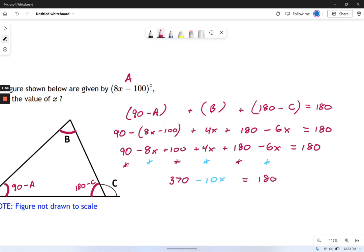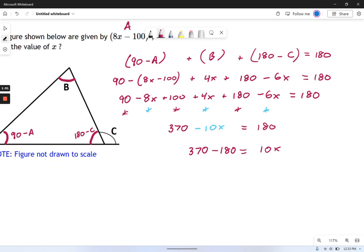So now what I'm going to do is add 10x to each side and subtract 180 from each side. I get 370 minus 180 equals 10x. Well, 370 minus 180 is 190 degrees equals 10x. And that means x, if I divide both sides by 10, x equals 19 degrees.